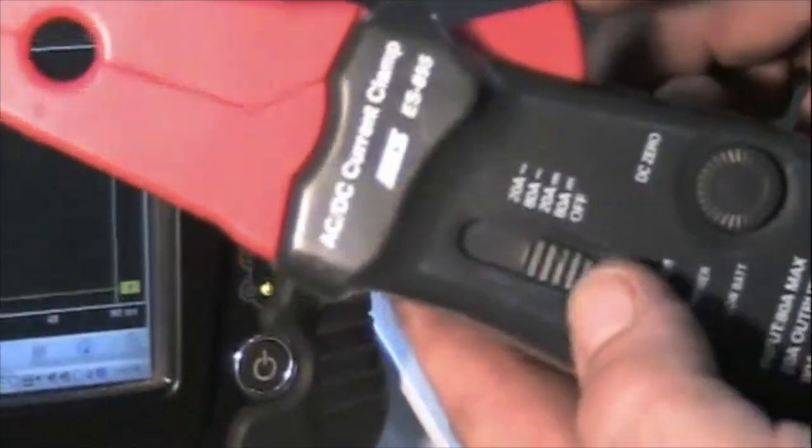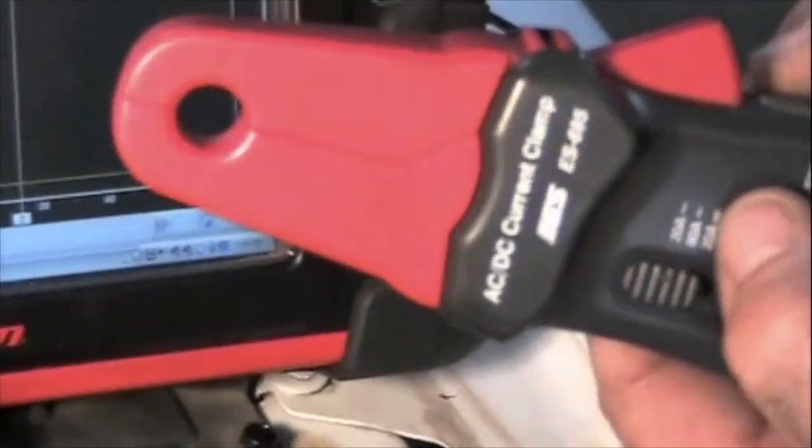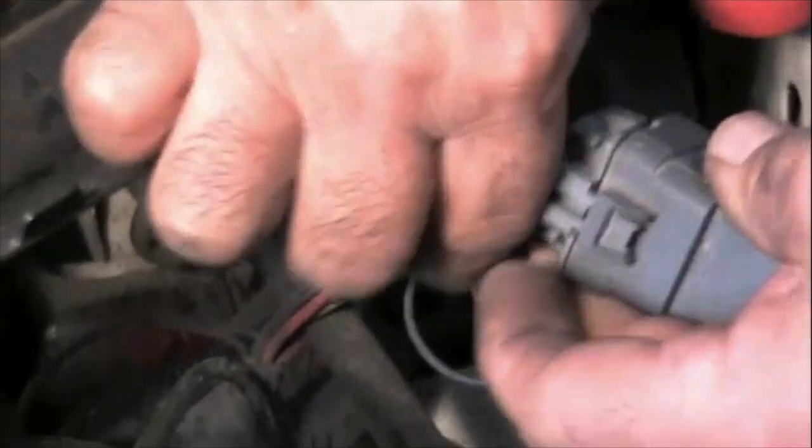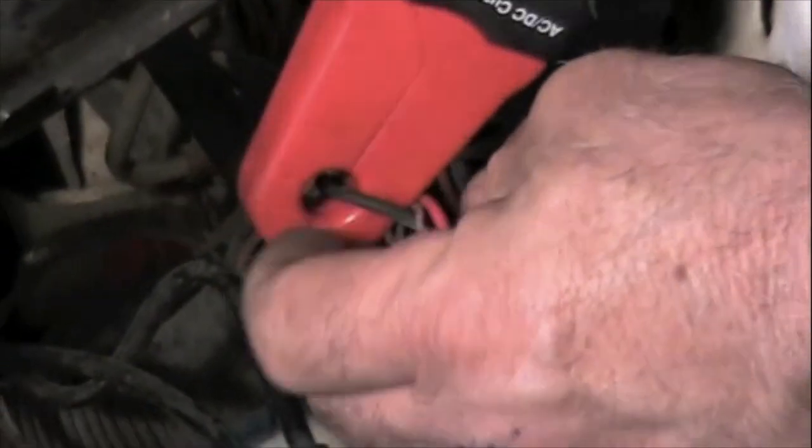I'm going to take my low amp current probe and switch it on to 20 amps, so it should show up to 20 amps. I'm going to zero it. Now I'm going to go to my relay, to this black wire which is the ground side of that circuit, and put my amp probe around it.